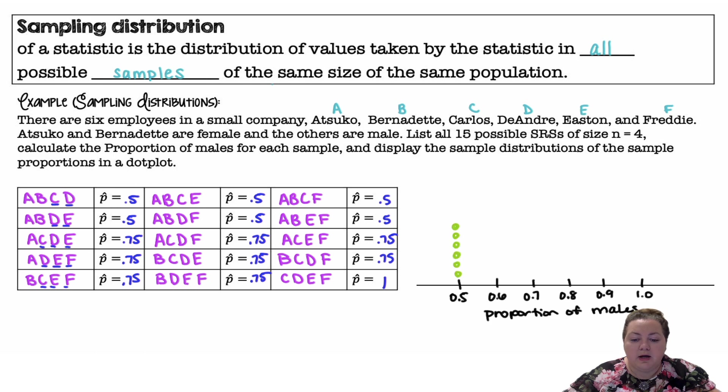And then I'm going to make a dot plot. So the proportion of males, I'm going to have 0.5 up to one. I had, I think it was six at 0.5. Eight that are 0.75 and one that is one. So that is my sampling distribution.